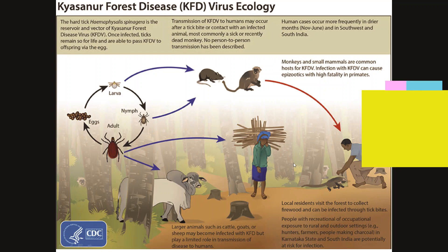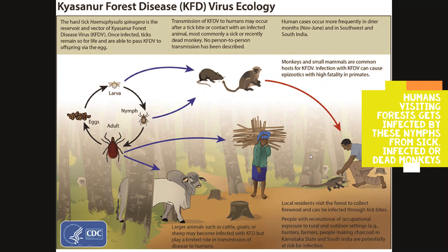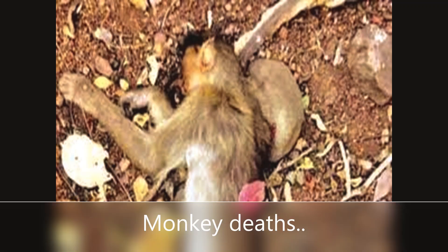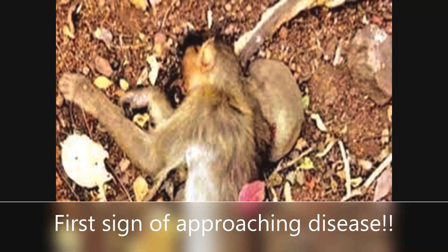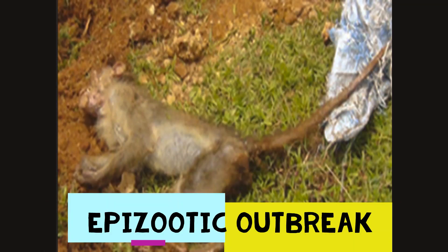When local residents visit the forest to collect firewood or honey, they get infected by these nymphs. Sometimes the ticks drop again and molt to adults, then attach to larger animals like cattle. Monkey deaths are regarded as the first signs of approaching human infection, as it manifests as an episodic outbreak among monkeys — hence the name Monkey Fever.